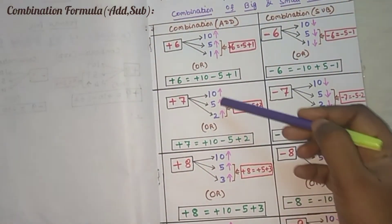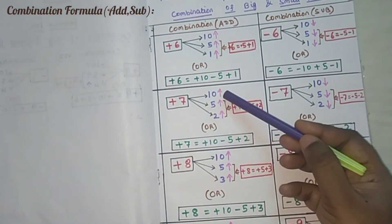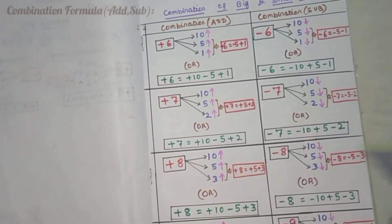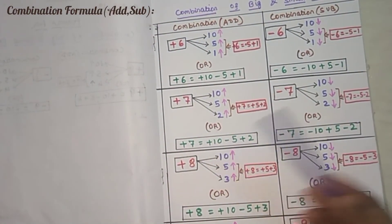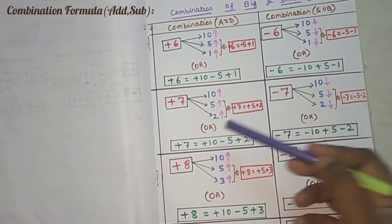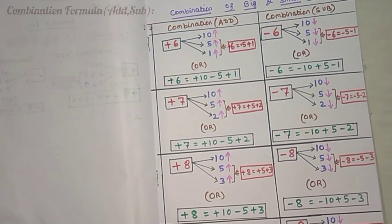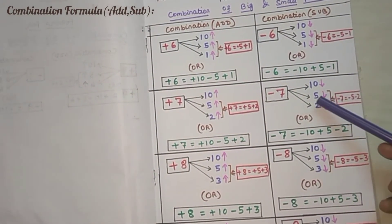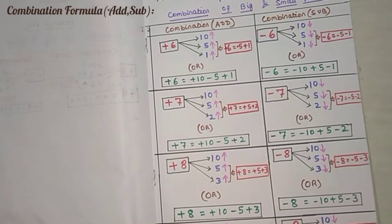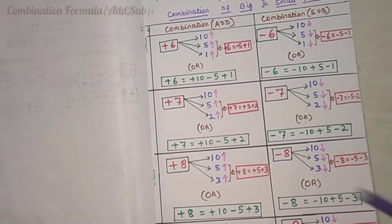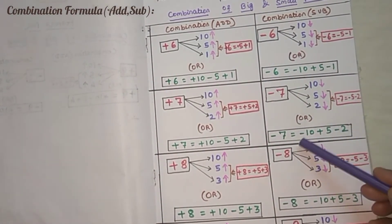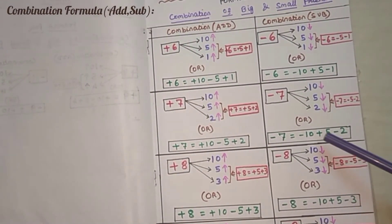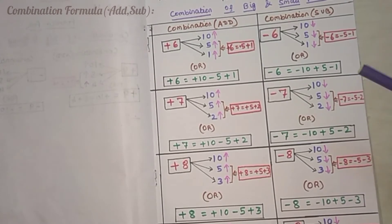Next number is 7. Move 10 and 5 by default: 10 upward, 5 upward. Since 5 + 2 = 7, move 2 beads in the upward direction. So: 10 up means plus 10, 5 up means minus 5, and 2 up means plus 2. For removing 7: −7 = 10 downward, 5 downward, and since 5 + 2 = 7, move 2 beads downward. 10 downward means minus 10, 5 downward means plus 5, and 2 downward means minus 2.